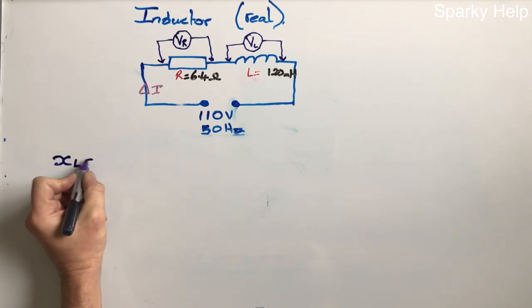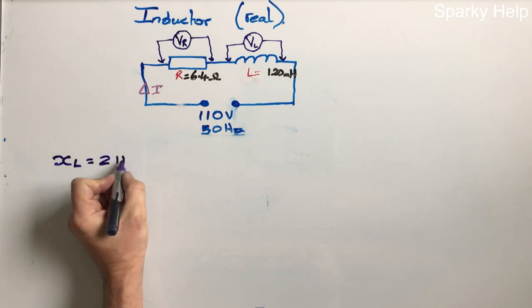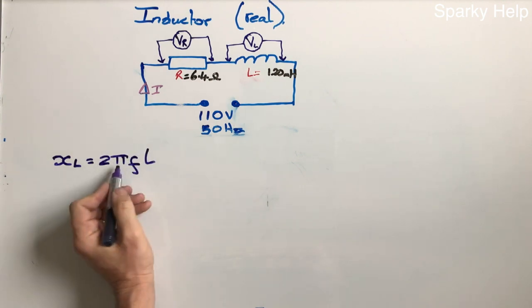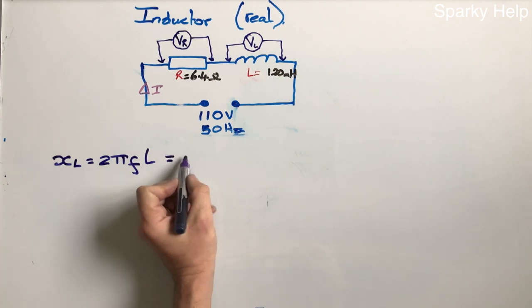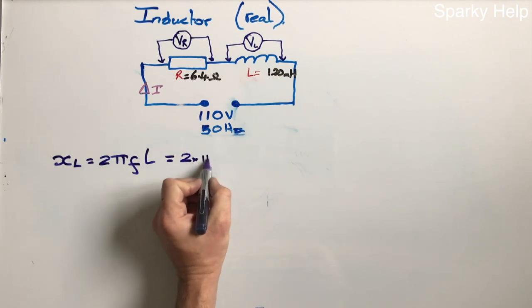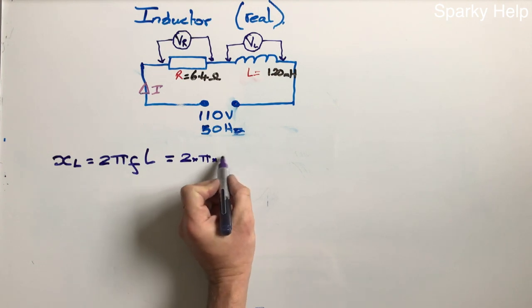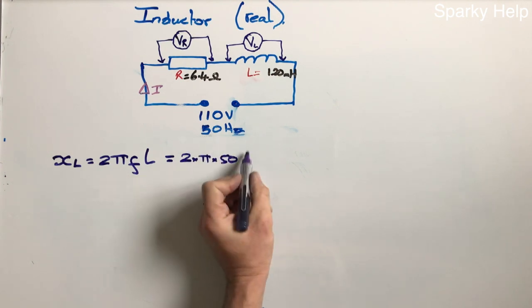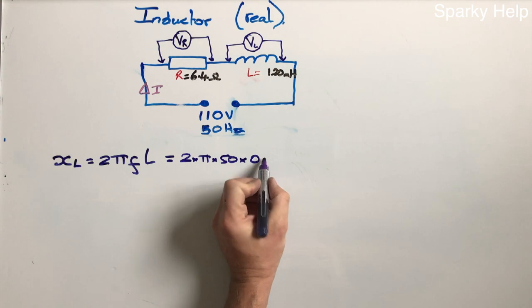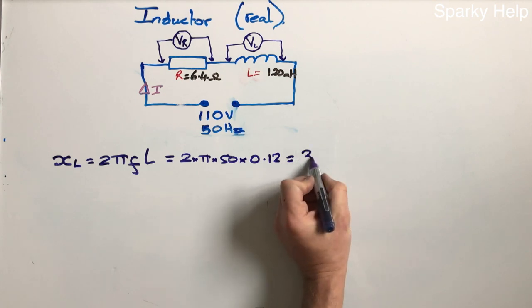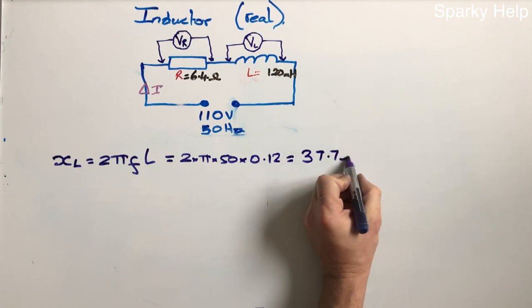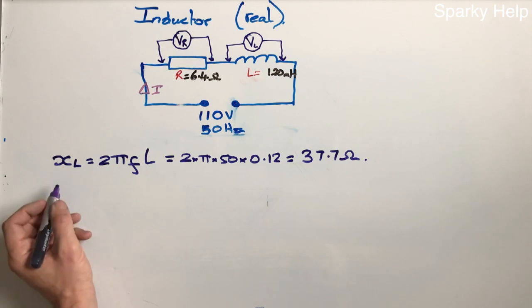So how do we start this? Well, we start off with XL. XL, remember, is 2 times pi times F times L. So I've not put any symbols in because they basically mean multiply. So if we put those figures in, 2 times pi times 50, because that's the frequency, times 0.12. If we do that as a calculation, what you get is 37.7 ohms.